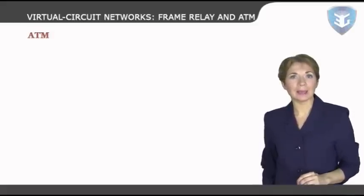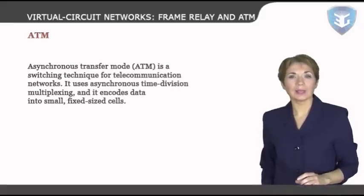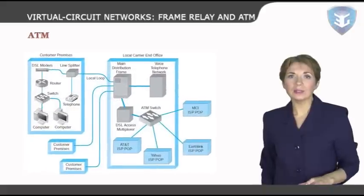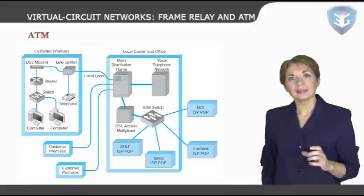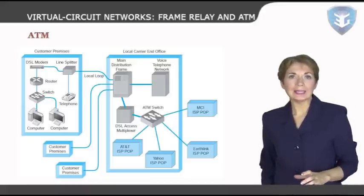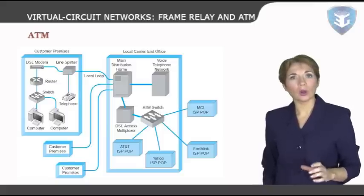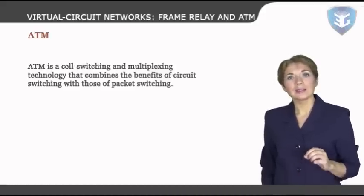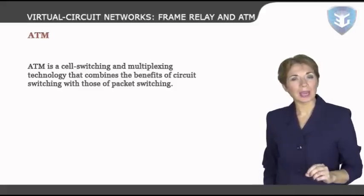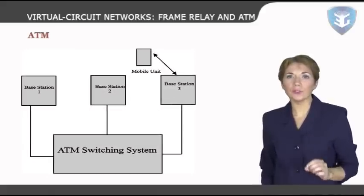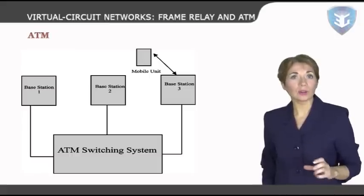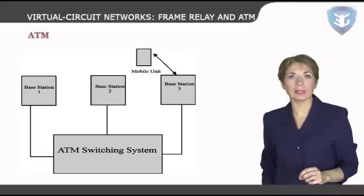Now we will learn about ATM. Asynchronous transfer mode, or ATM, is a switching technique for telecommunication networks. It uses asynchronous time division multiplexing and encodes data into small, fixed-sized cells. This differs from networks such as the internet or Ethernet LANs that use variable-sized packets or frames. ATM provides data link layer services that run over OSI layer 1 physical links. ATM is a cell switching and multiplexing technology that combines the benefits of circuit switching with those of packet switching. It provides scalable bandwidth from a few megabits per second to many gigabits per second. Because of its asynchronous nature, ATM is more efficient than synchronous technologies such as time division multiplexing, or TDM.